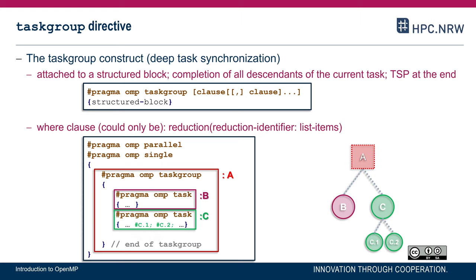To illustrate the difference with taskwait: the taskgroup waits for all tasks generated in the dynamic extent of the construct, which includes tasks B and C, but also C1 and C2 that are created as part of the execution of task C — and any further tasks created by B, or by C1 and C2, and so forth. So it's a deep task synchronization.